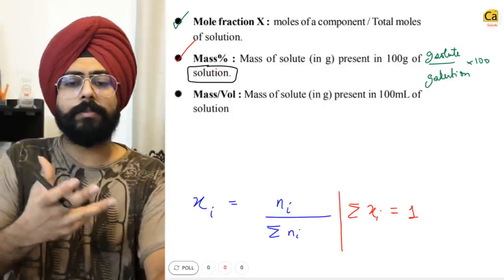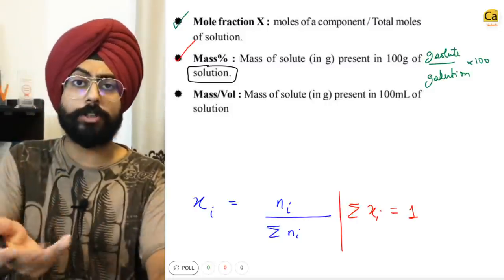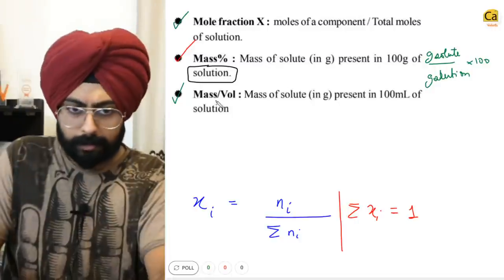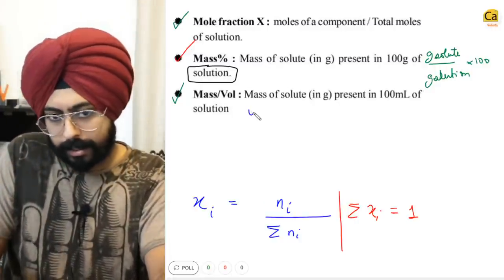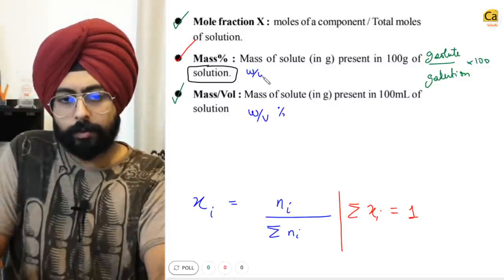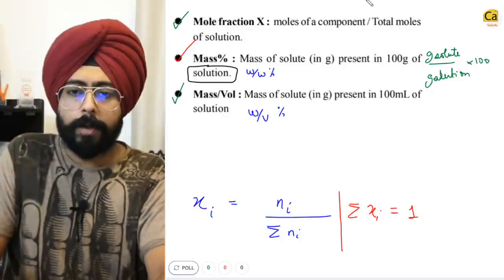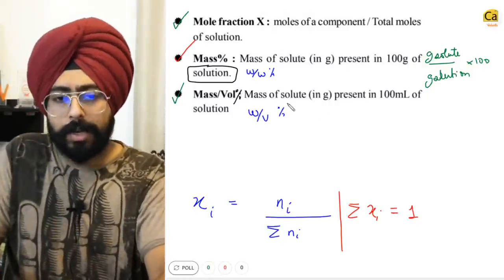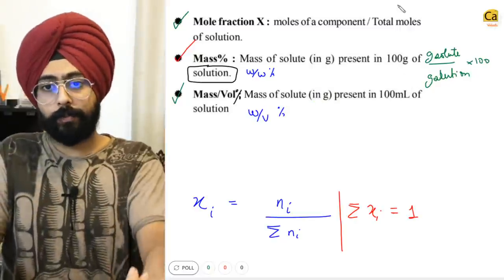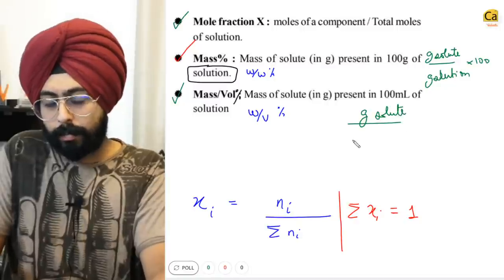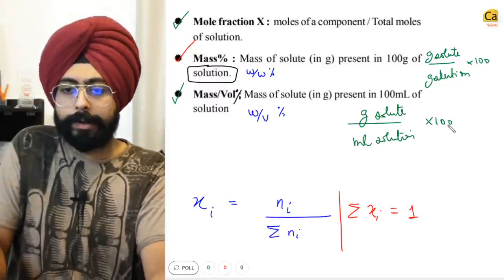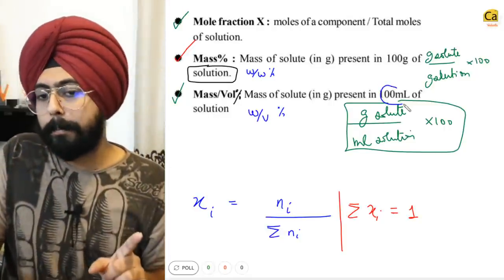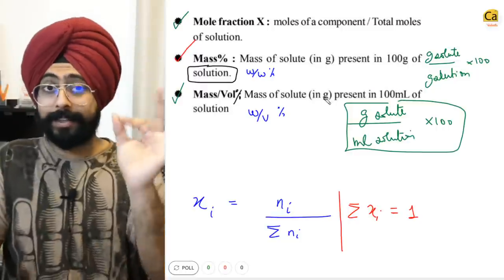Mass percent makes sense for solid solutions. When you have solid-liquid solutions, you use mass per unit volume, written as W/V%. Mass by volume percent refers to mass of solute in grams present in 100 milliliters of solution: grams of solute ÷ milliliters of solution × 100. The 100 milliliters is very important here.